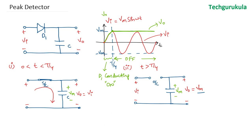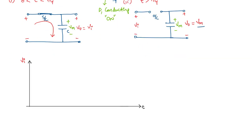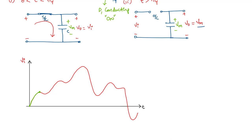To understand this better, let's take a random waveform and see how the circuit works. Starting at t = 0, the voltage across the capacitor is 0. As the input voltage increases, the voltage at the P side of the diode is higher than the N side (the capacitor voltage), so the diode is forward biased — short circuit. The voltage across the capacitor follows the input voltage. When it reaches the first peak, beyond that point the capacitor voltage is higher than the input, making the diode voltage negative, so the diode becomes open circuit.